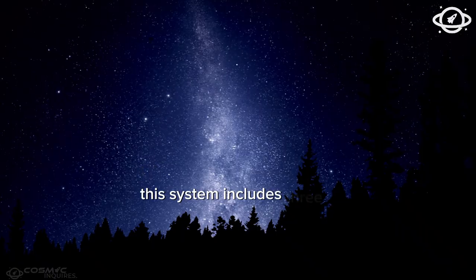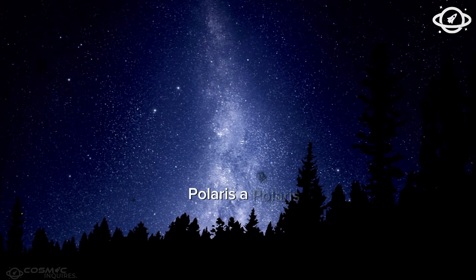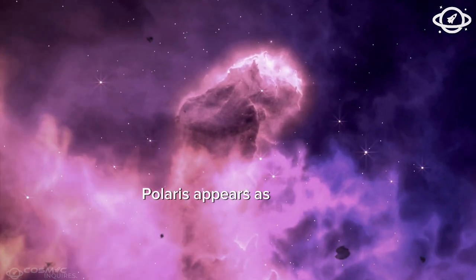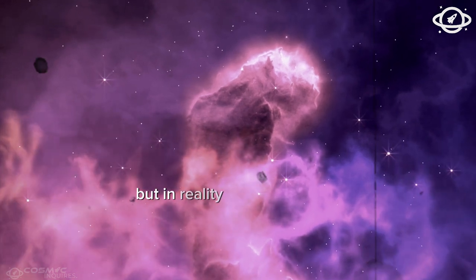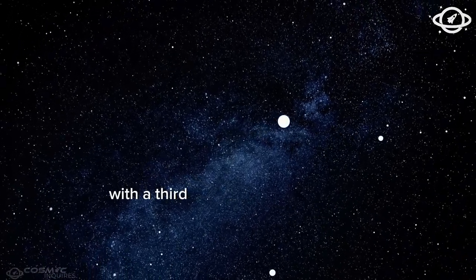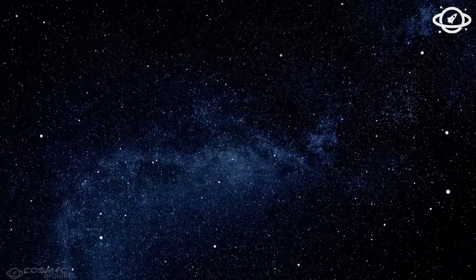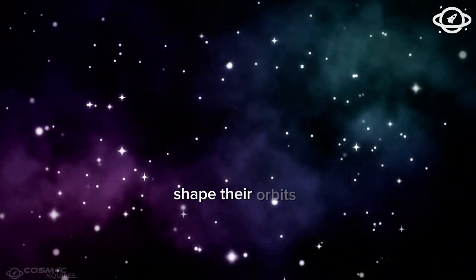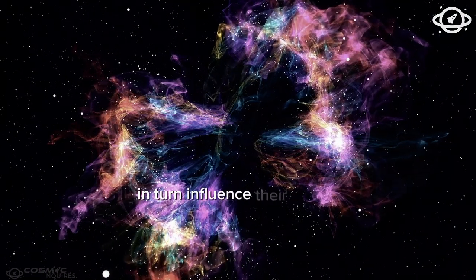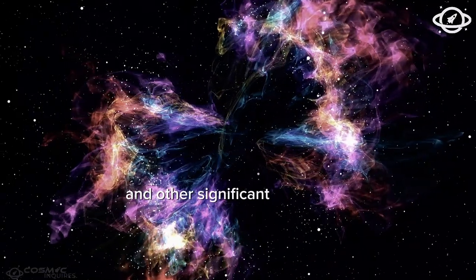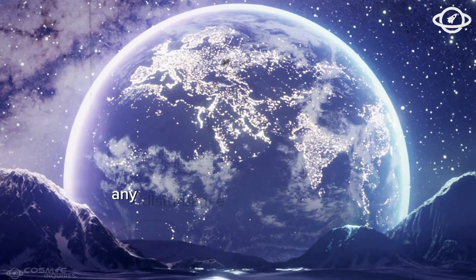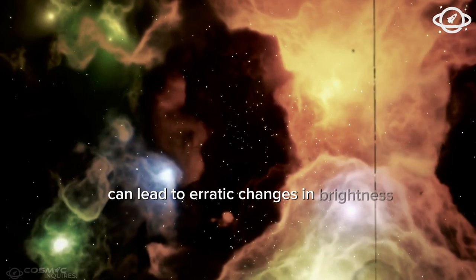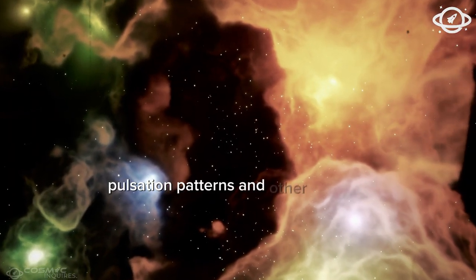This system includes three stars: Polaris A, Polaris AB, and Polaris B. To the naked eye, Polaris appears as a single star, but in reality it is a binary system with a third star orbiting the primary pair. The gravitational interactions between these stars shape their orbits and influence their luminosity and other significant characteristics. Any disturbance in this delicate balance can lead to erratic changes in brightness, pulsation patterns, and other observable traits.